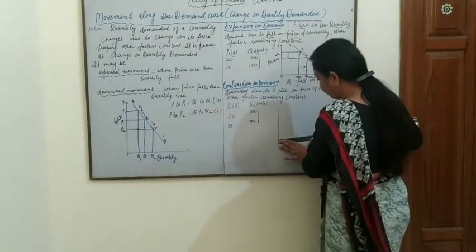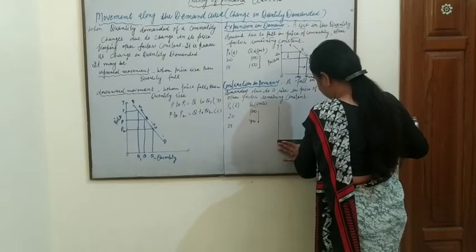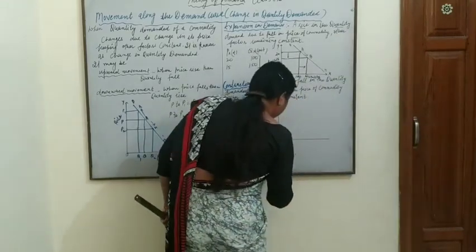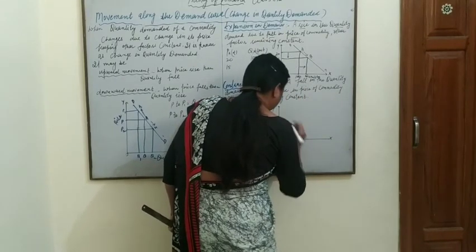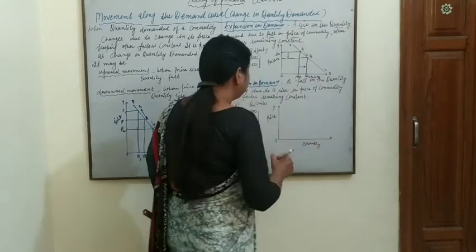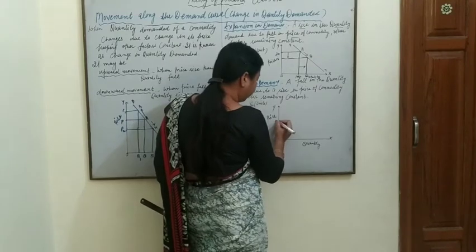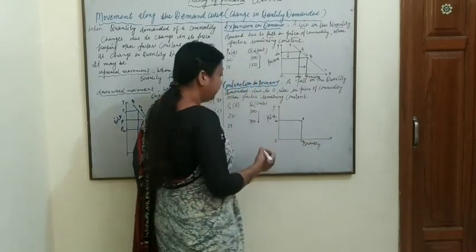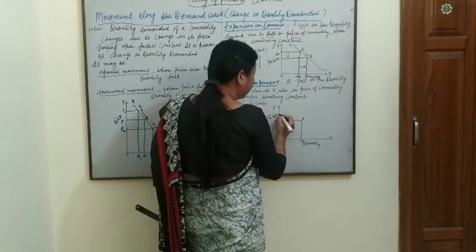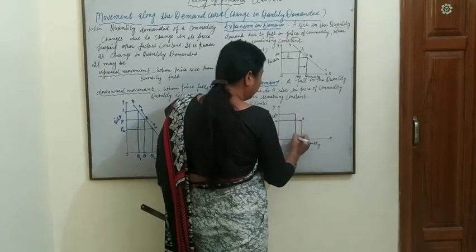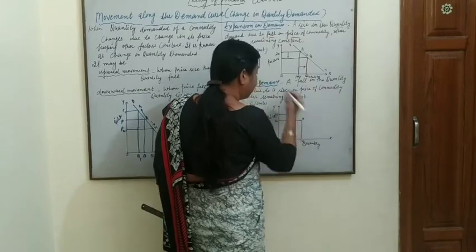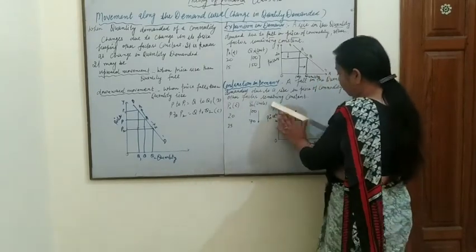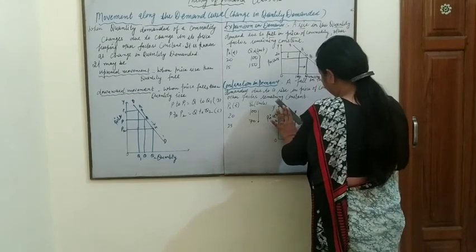In the diagram, on the OX axis we show quantity and on the OY axis we show price. When price is 20, quantity demanded is 100 units — this is point A. Now, price increases from 20 to 25. We are demanding less units, and we move to point B. From point A to B, due to a rise in price, we demand fewer units — this is known as contraction of demand.